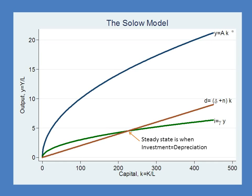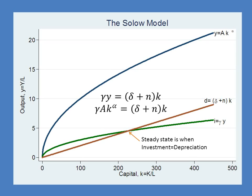The key to the Solow model is that you reach the steady state when investment equals depreciation. Taking the equations for investment and depreciation, the steady state is found when that equation holds. The Y here is output per person, equal to A times the capital-labor ratio to the power of alpha. Substituting for Y, we get our equation for the steady state.